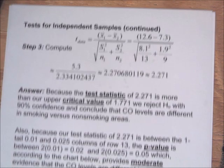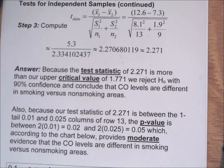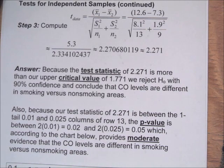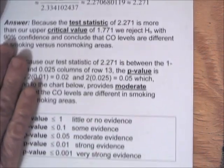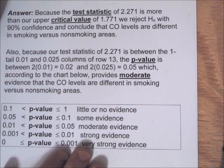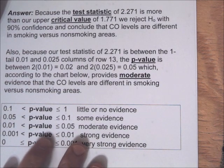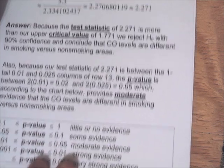We can also estimate the p-value. Because the test statistic falls between the one-tail 0.01 and 0.025 columns in row 13, the p-value is between 2 times 0.01 (which is 0.02) and 2 times 0.025 (which is 0.05). A p-value between 0.02 and 0.05 provides moderate evidence that the carbon monoxide levels are different in smoking versus non-smoking areas.